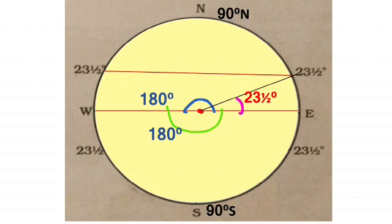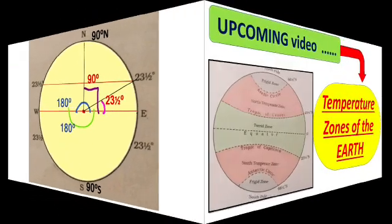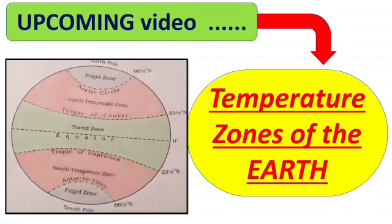Let's take another example of 90 degrees north — here it will make an angle of 90 degrees at the center. I hope now you are clear about latitudes. But this is not the end of the topic. In the next video, we will discuss about different temperature zones of the earth. Till then, stay safe and continue with my channel.